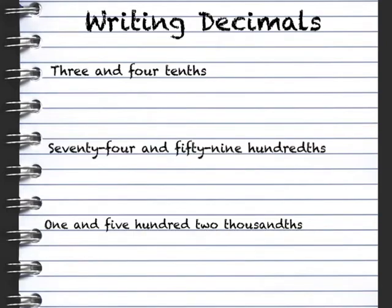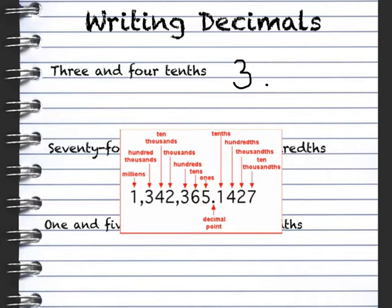Now we're going to write decimals. 3 and 4 tenths. 3 and means I have a decimal point. 4 tenths. If I refer back to my chart, I can see that tenths is the first place after the decimal point. So, 4 belongs in the tenths place. 3 and 4 tenths looks like this, 3.4.